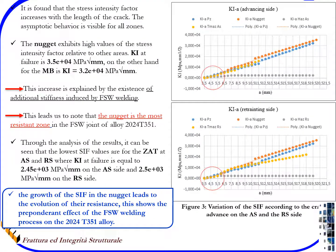At figure 3 we can see the result of the stress intensity factor. It is found that the stress intensity factor increases with the length of the crack. The asymptotic behavior is visible for all zones. The nugget exhibits high values of the stress intensity factor relative to the other areas. This increase is explained by the existence of additional stiffness induced by FSW welding. This leads us to conclude that the nugget is the most resistant zone in the FSW joint of aluminum alloy 2025-T351. The growth of the stress intensity factor in the nugget leads to the evolution of the resistance.